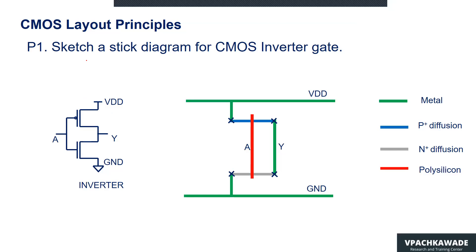Let's have a look at CMOS layout principles. That's problem number 1, where we are drawing the stick diagram for a CMOS inverter gate. This is the schematic. We have input A and output Y, and the terminals for these switches can be marked like this — drain and source of NMOS and source and drain of the PMOS. Let's have a look at how we can use the stick diagram for the CMOS inverter gate layout.